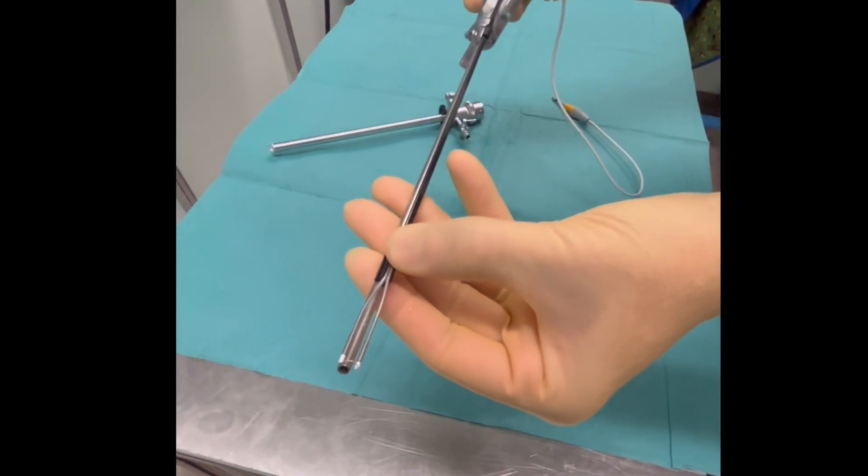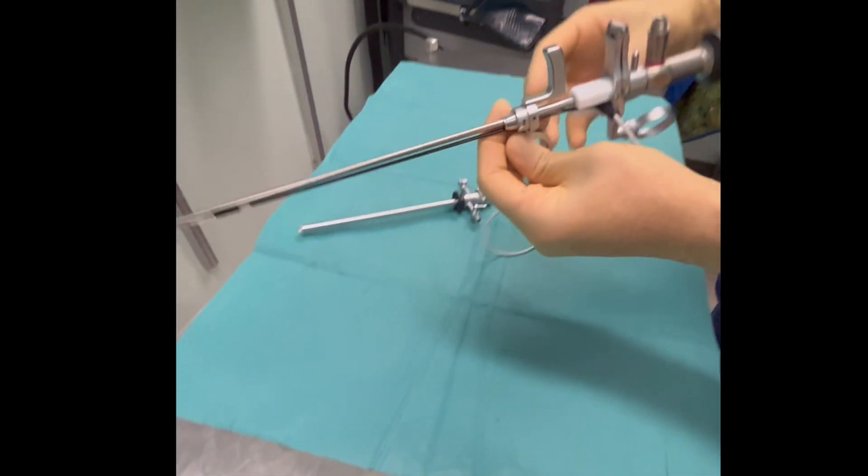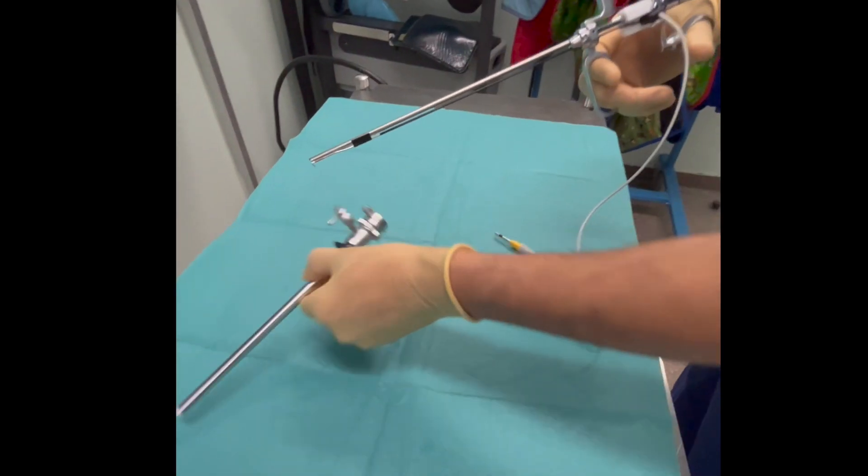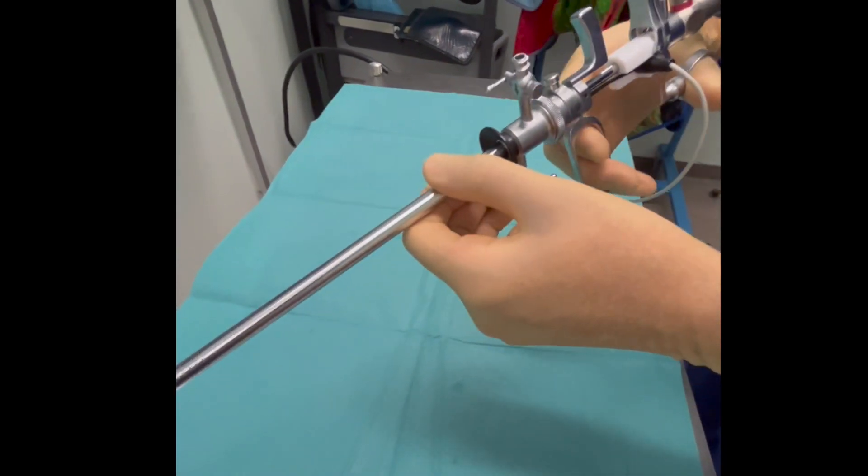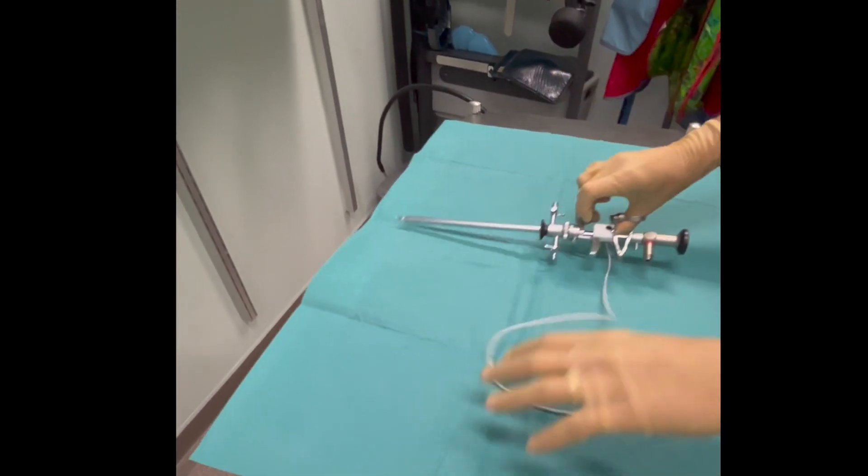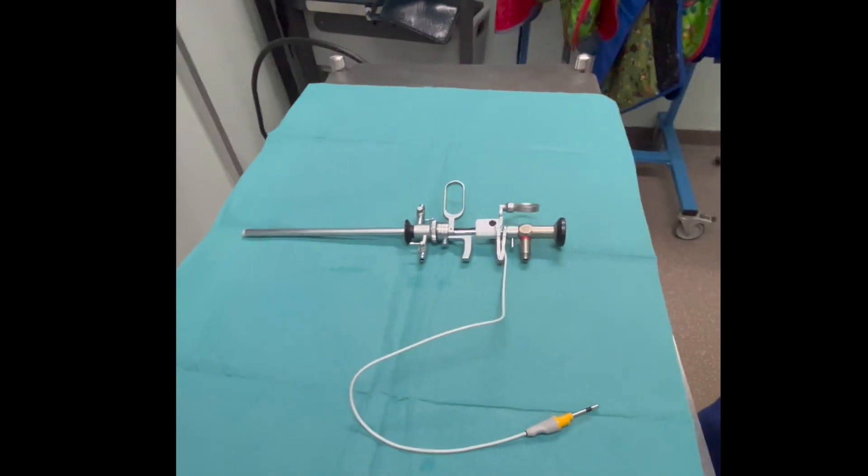The distal end is then fixed to the telescope. The black knob should fit into the system and is key to prevent any water leakage. This is the final assembly of the resectoscope. Thank you for watching.